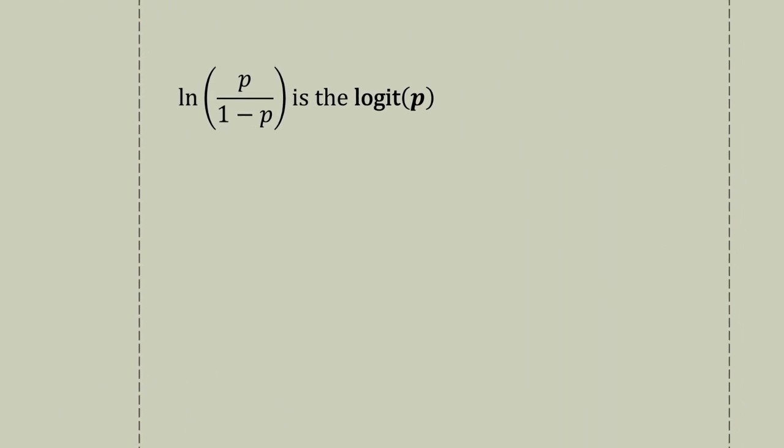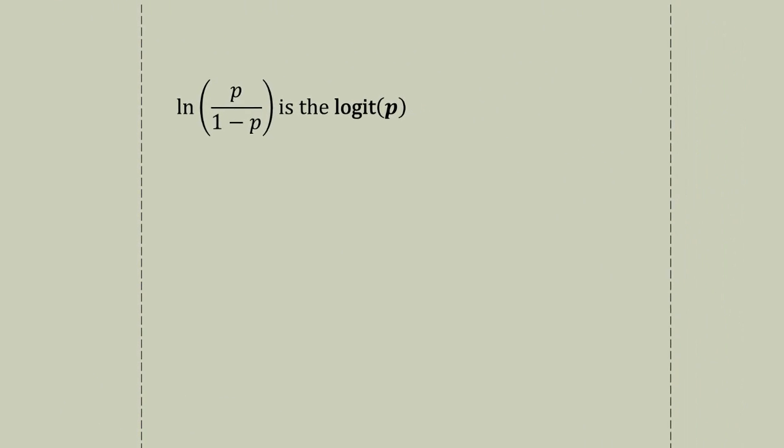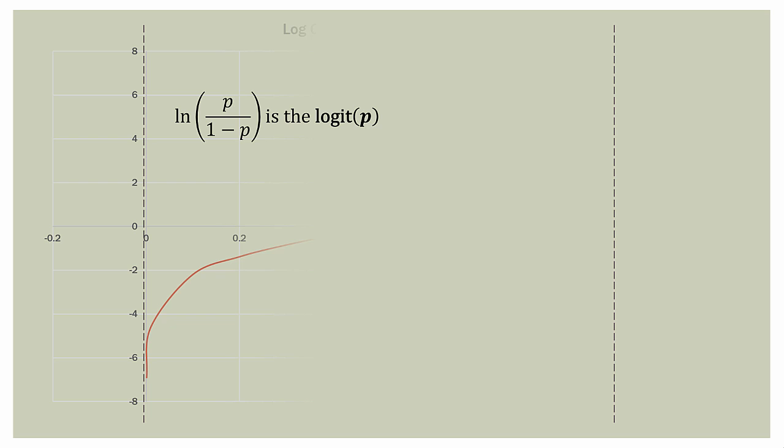If we graph this on a smaller scale, squishing together the y-axis, we can see that it makes a very interesting function — what we call an S-curve, or a sigmoid curve. The domain runs from zero to one. So by using the log odds, or the logit function, we are getting very close to what we need to better understand logistic regression.